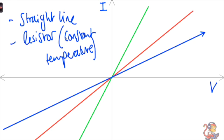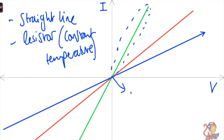The important thing is that the resistor has to be at constant temperature, and we'll discuss why when we talk about the lamp in a minute. For a resistor at constant temperature, this is the type of line you will see on a current-potential difference graph. Remember, every straight line going through the origin means that the relationship is directly proportional.